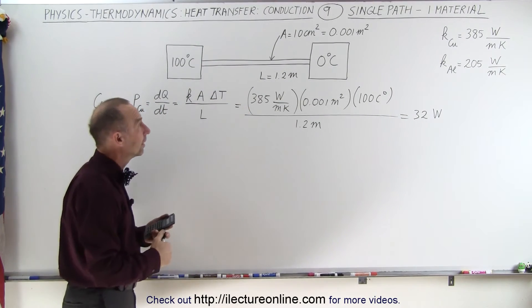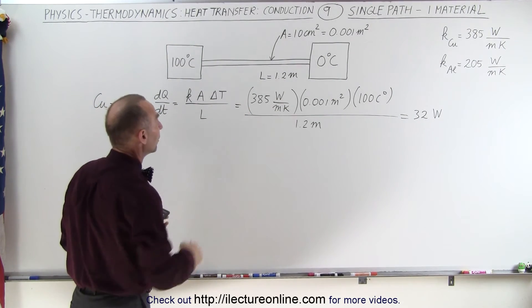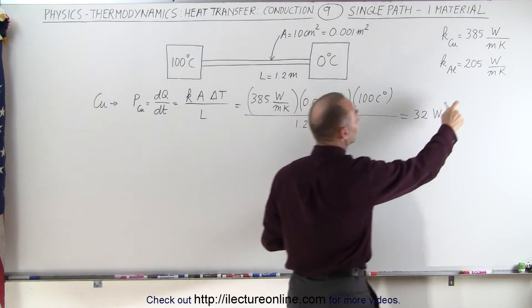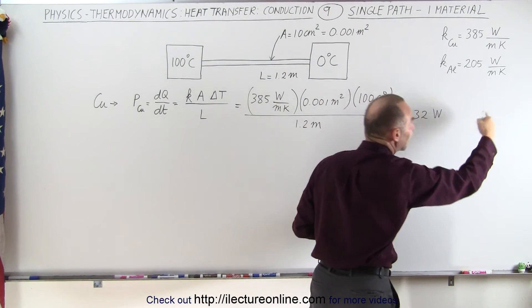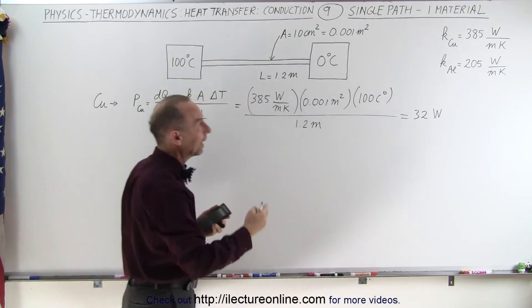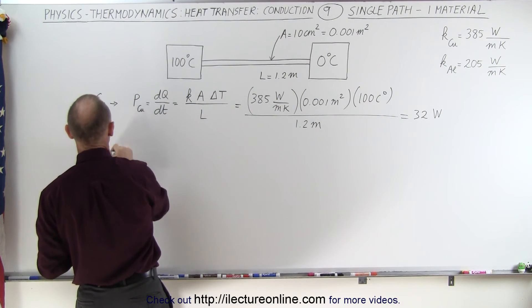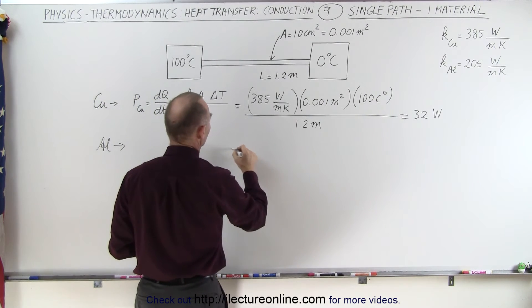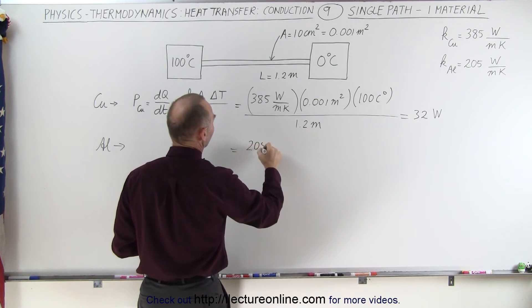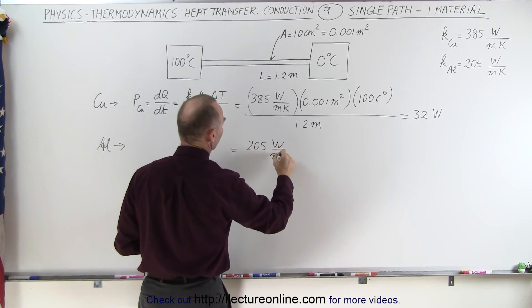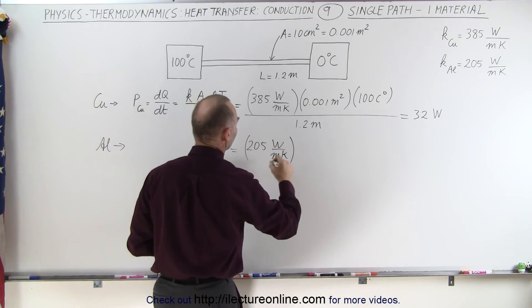Now, let's do this again, but this time we're going to use aluminum. Notice that the conductivity constant is less, and therefore less heat will be transferring across, and it'll be proportional to the heat conductivity constant. So for aluminum, we're going to use 205 watts per meter per kelvin, everything else stays the same.